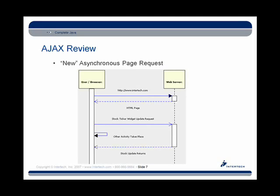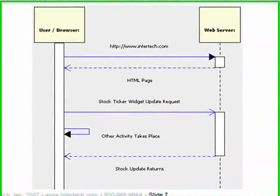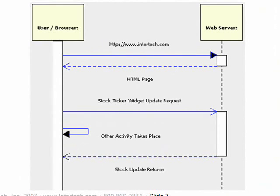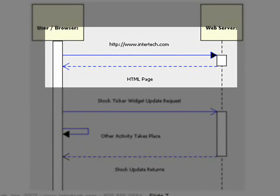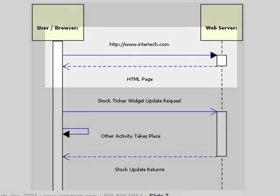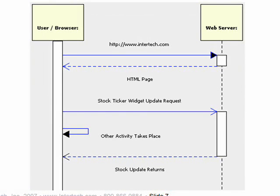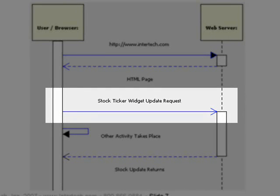A typical Ajax request starts the same way as a synchronous page request: the user requests a web page, it gets sent to the web server, and an entire HTML document is sent back. But now let's say there are different components on the page — a stock ticker widget and a weather widget. The stock ticker needs to update itself so the price is accurate, either through a user interaction like clicking 'update now' or programmatically after a certain duration. The widget itself makes requests to the web server to get more information.